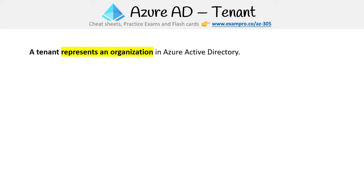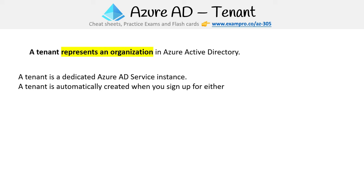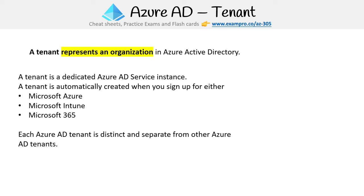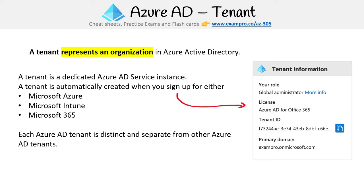A tenant represents an organization in an Active Directory and is dedicated to the Azure AD service instance. A tenant is automatically created when you sign up for Microsoft Azure, Microsoft Intune, or Microsoft 365. Each Azure AD tenant is distinct and separate from other Azure AD tenants. If you click on your tenant information in Azure AD, that's your organization's dedicated instance — it has its own special tenant ID. For example, the ExamPro tenant is licensed for Office 365, which shows we're using the Office 365 tier of Azure AD.